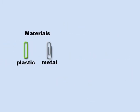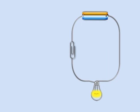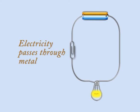Let's insert some different materials into a simple circuit made up of some wire, a battery, and a bulb, and see if it works. If a metal paper clip is inserted, the bulb lights up because electricity passes through metal.